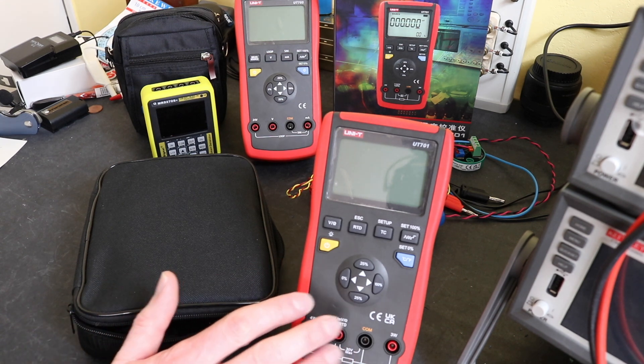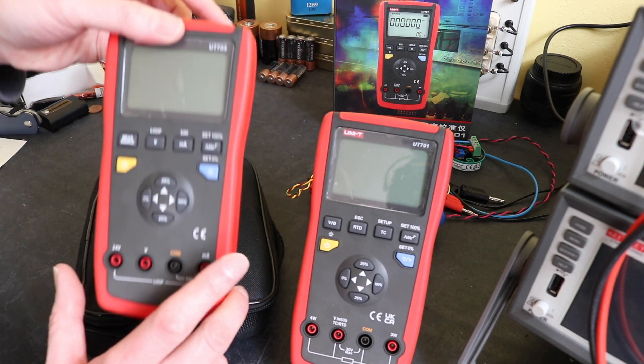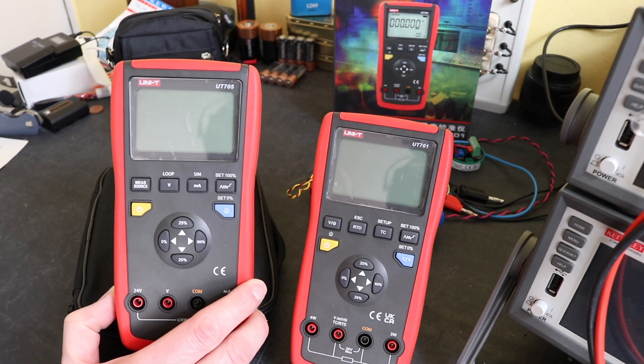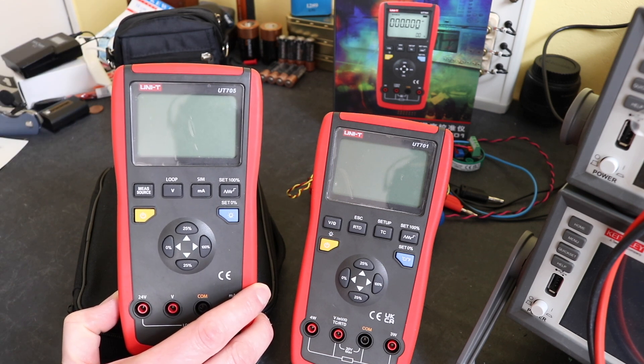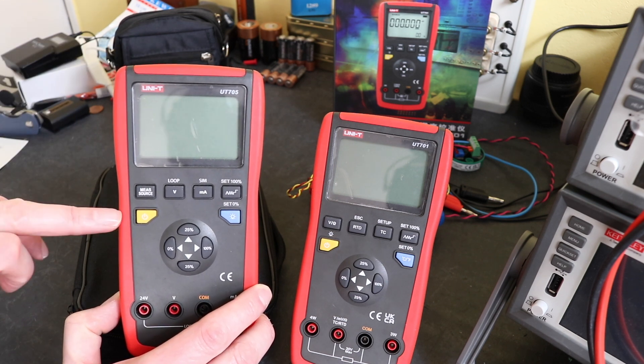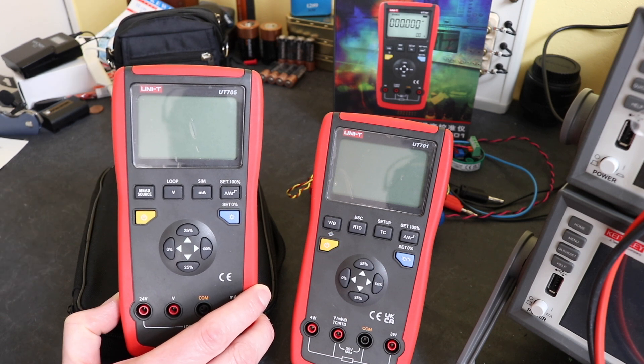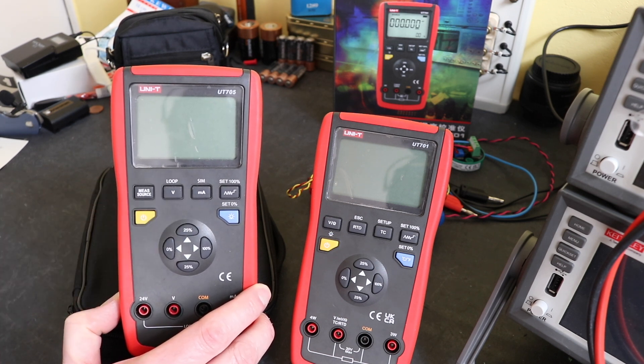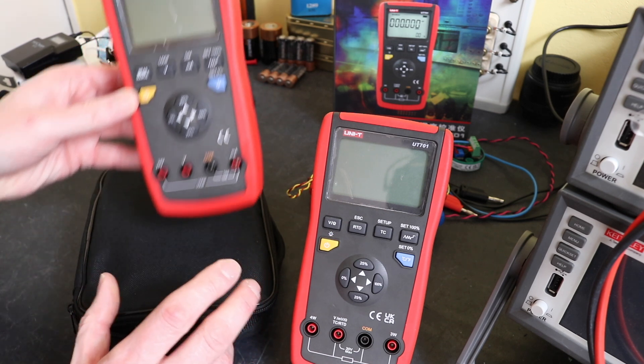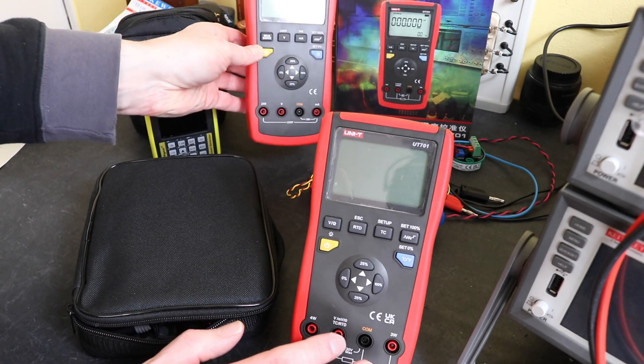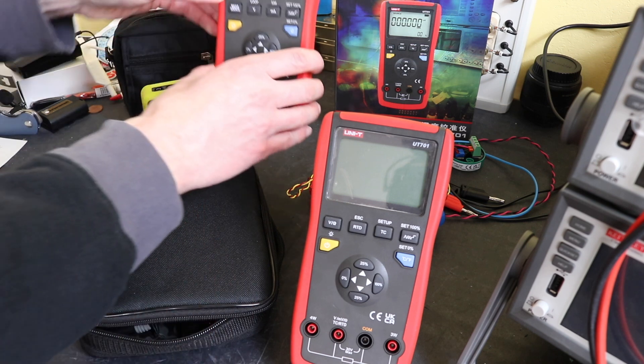This here is the sister unit to the UT705 that we looked at previously. I will leave a link to the video on this unit in the description box below. But this unit provides me with process measurement and source capability for voltage and milliamps. It does not however give me any temperature measurement capability and that's what the UT701 does for me here.